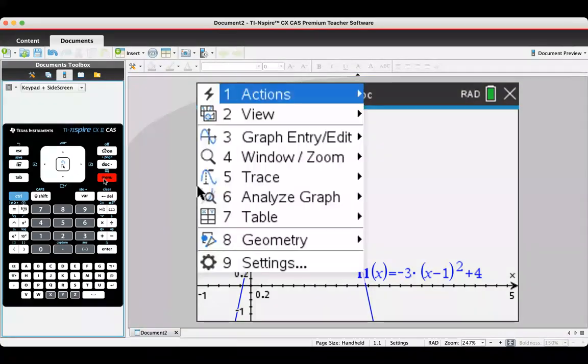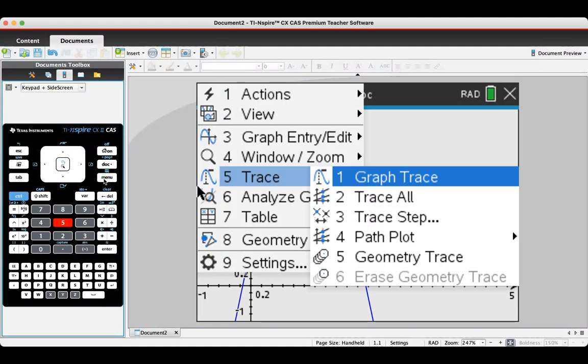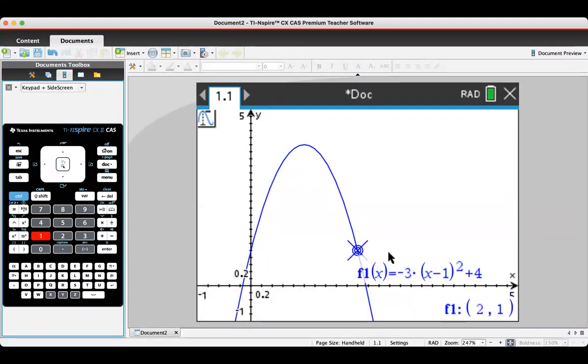Just as a reminder, if I go to menu and I go to number five which is trace, I can do a graph trace, that's number one, and I get a little crosshairs here and I can use the arrows.